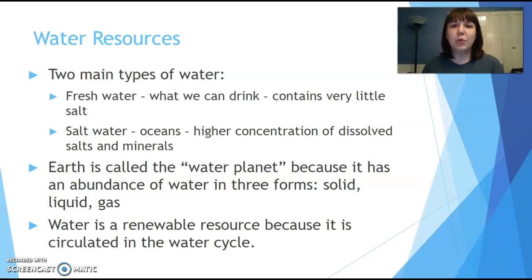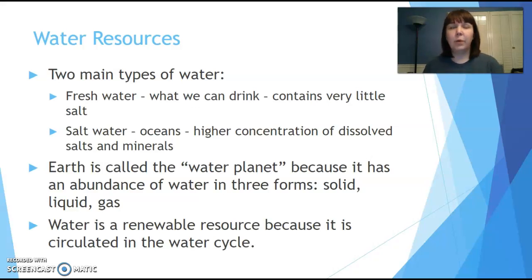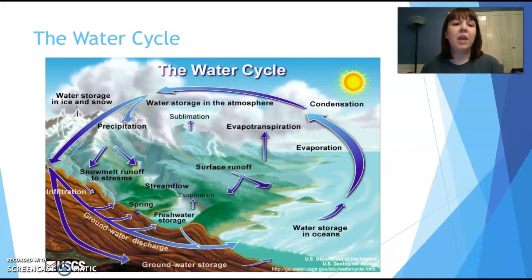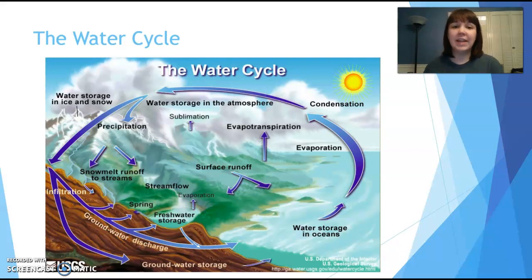When we talk water, we're going to talk about two main types: fresh water and salt water. Fresh water is exactly what it sounds like — what we drink, very little dissolved salts. Salt water usually has a higher concentration. We have an abundance of water on earth existing in solid, liquid, and gas form all over the place. It's a renewable resource because of the water cycle, but there is still concern about how we use it and take care of it. Water pollution can exist at any point in this cycle and can affect any part along the path.